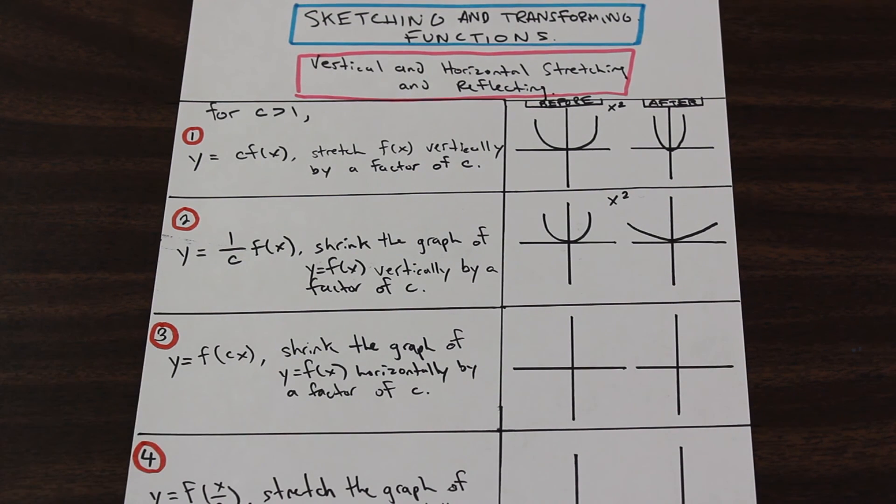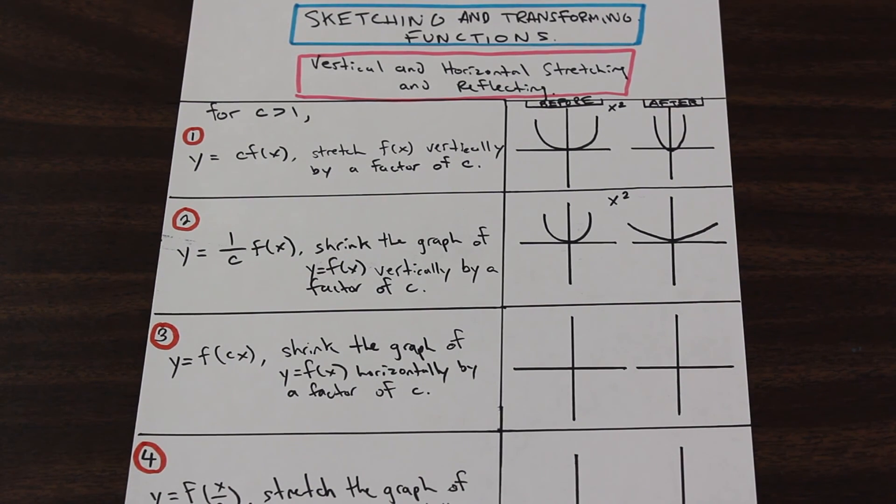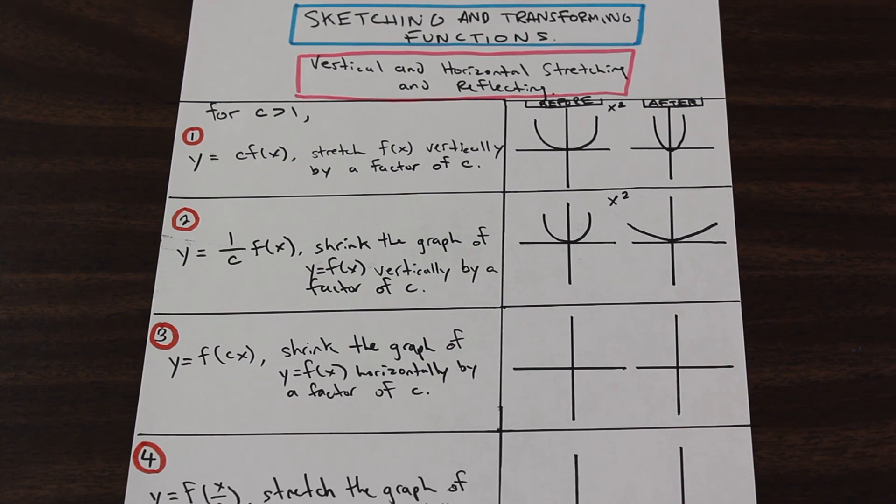So let's go to number three. We have y equals f of c of x. So what that means is that now that constant isn't multiplied by the entire function, but it's actually inside the argument. And we're going to shrink the graph of y equals f of x horizontally by a factor of c.